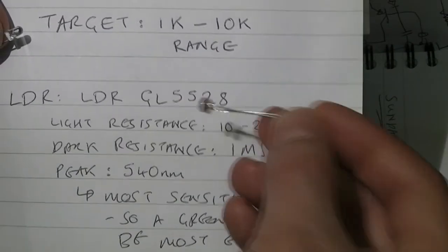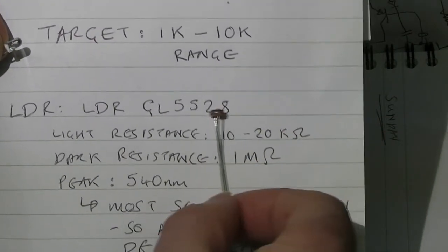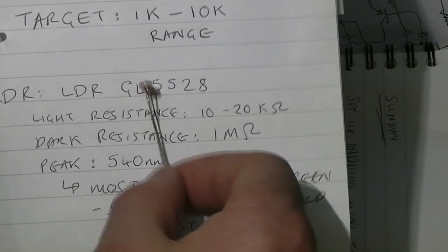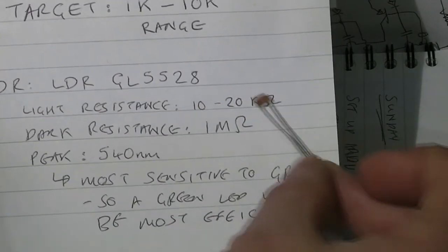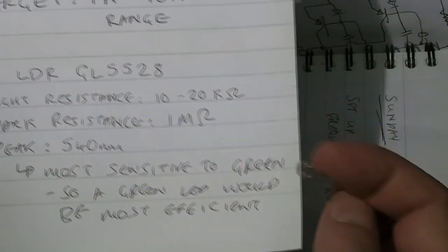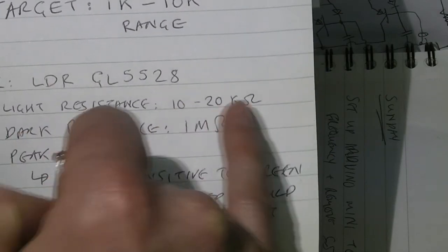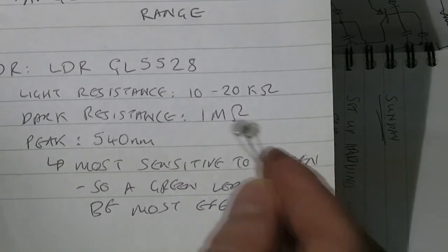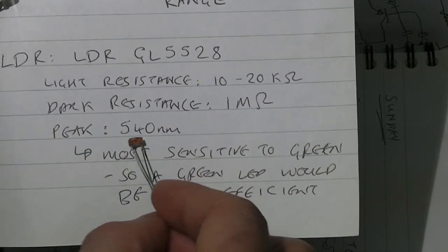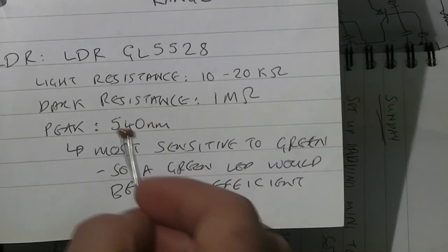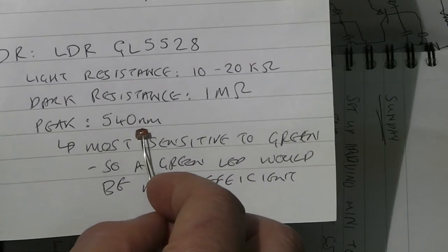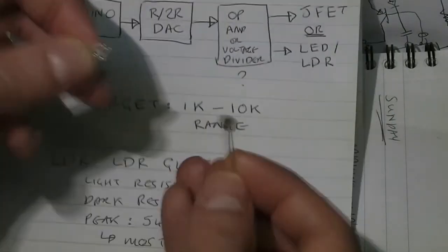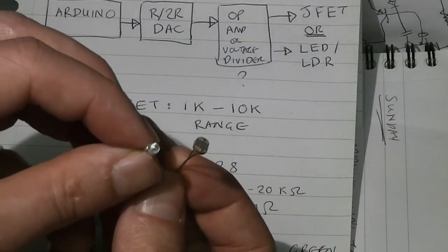The LDR that I have is called GL5528. It's probably not particularly important, the specific part number. These are very common specs for an LDR. When it's light, the resistance varies between 10 to 20 kilo ohms, and when it's dark, the resistance is 1 mega ohm. The peak sensitivity, I think this is very common for LDRs which are cadmium sulfide based, is 540 nanometers, which is green essentially. So I would do best to use a green LED.